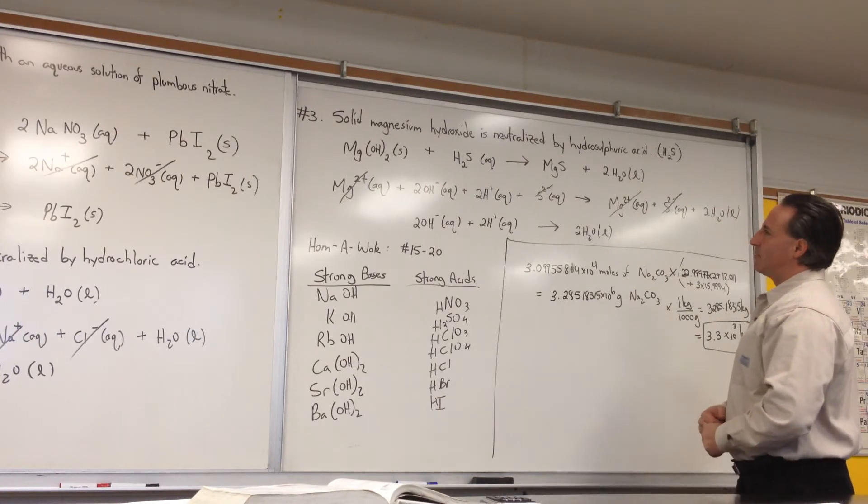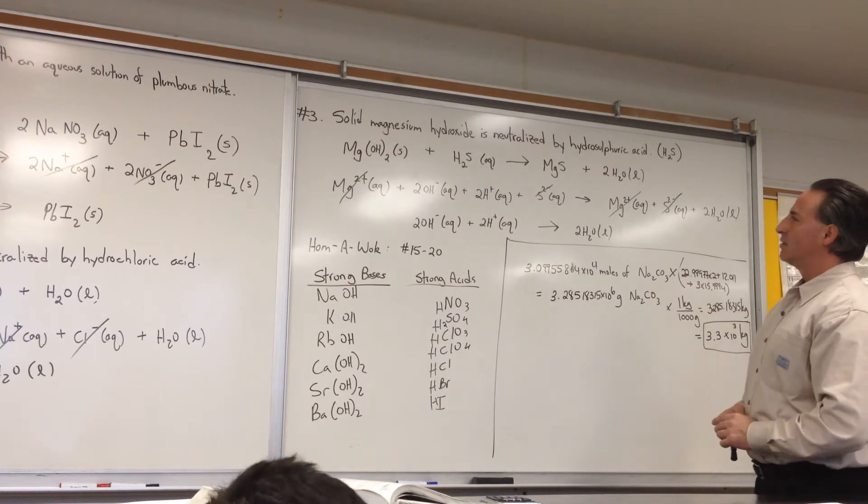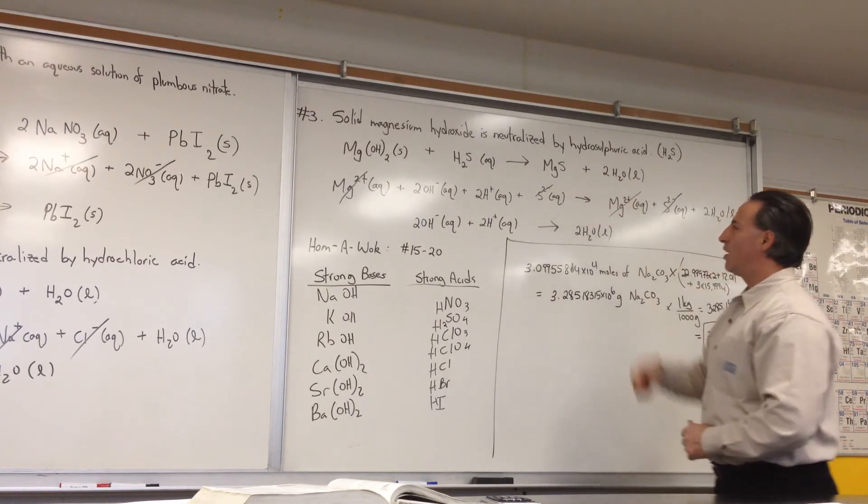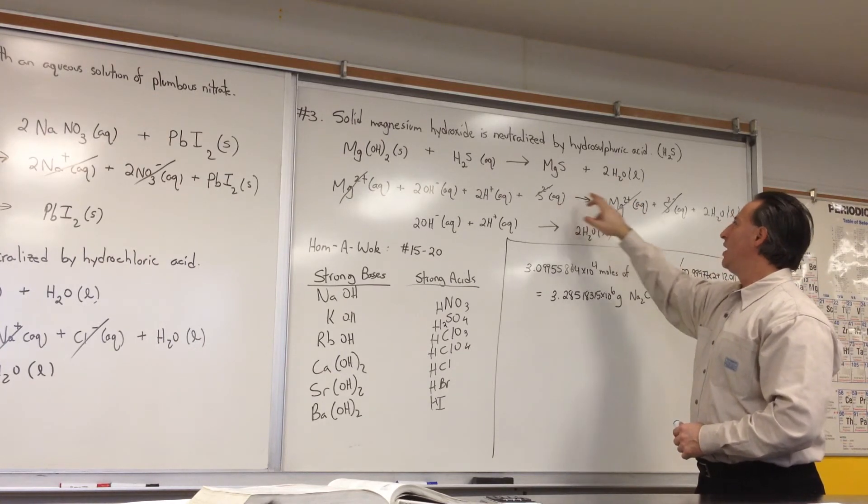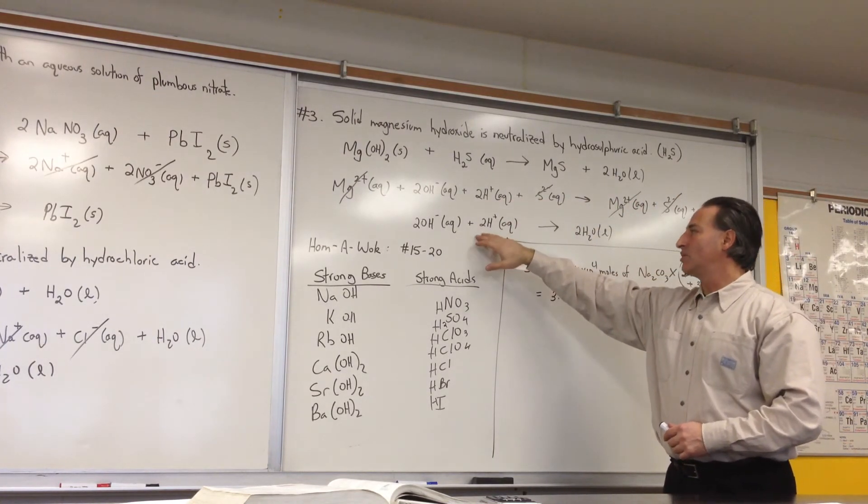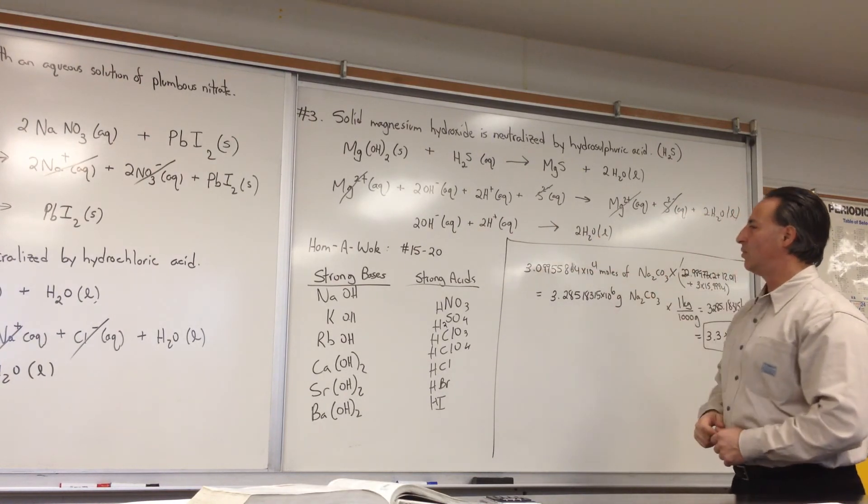So we show, in the last example, magnesium hydroxide reacting with hydrosulfuric acid. The products are magnesium sulfide and water. There's the molecular equation. Here I show everything dissociated. And then I crossed off everything that's a spectator. So the net reaction is, again, OH minus plus H plus gives you water.